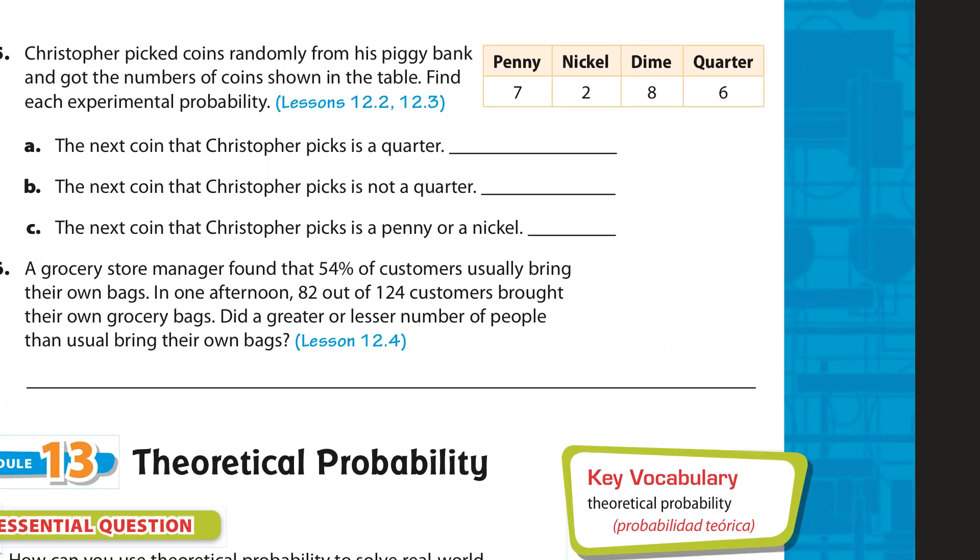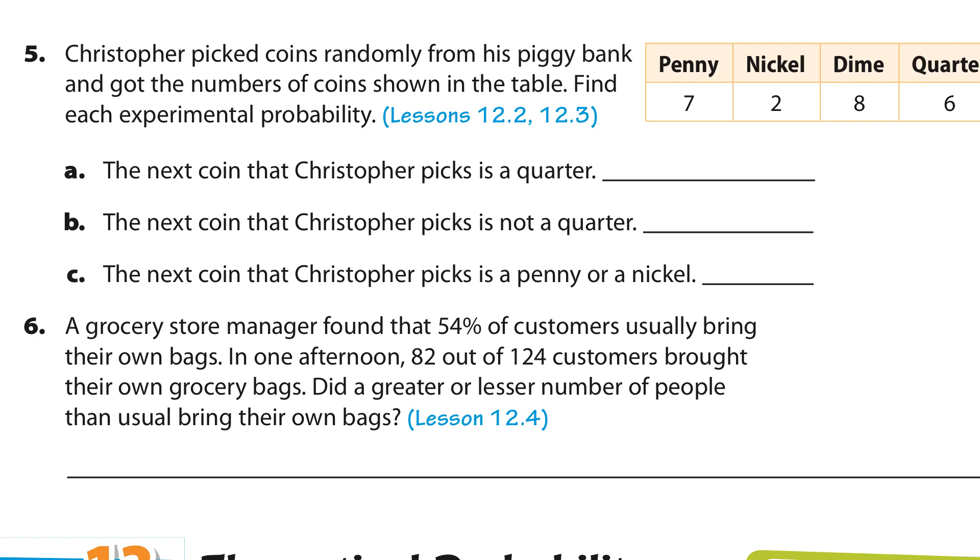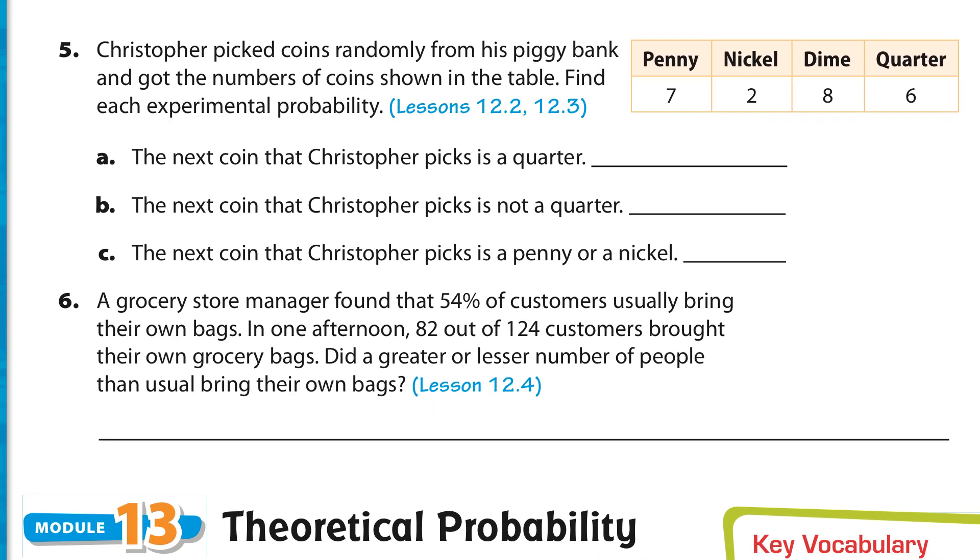Christopher picked coins randomly from his piggy bank and got the number of coins shown in the table. And, find the experimental probability. So, the next coin is going to be a quarter. Well, how many quarters are there? There are 6. And, out of how many total, when you add up all of our numbers here, 7 and 2 is 9, 17 plus 6 is 23. So, this is 6 out of 23.